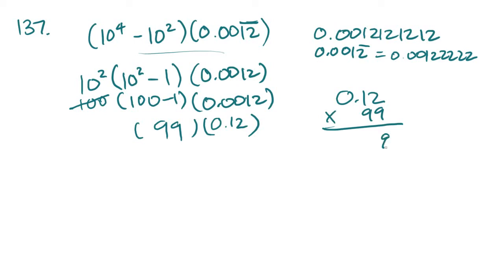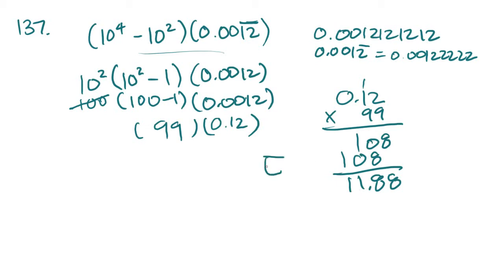Multiplying it out: 0.12 times 99 gives 11.88. The answer choice closest to that is going to be E, which is 12. And that's how you solve 137.